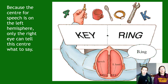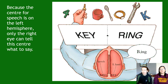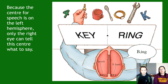Because speech is in the left hemisphere, you can only say what your right eye sees. In this case, the right eye sees the word 'ring,' and that information goes to the left hemisphere, so the speech centre says 'ring.' It can't say 'key' because that information went to the right hemisphere, which has nothing to do with speech. Fascinatingly, if you asked this person what word was on the left, they'd say 'I don't know' — they genuinely have no idea, even though their hand picked up a key.